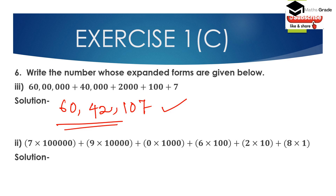Fourth: 7 × 10 lakh + 9 × 10,000 + 0 × 1000 + 6 × 100 + 2 × 10 + 8 × 1. Now 7 multiplied by 10 lakh is 70 lakh, and 9 multiplied by 10,000 is 90,000, and 0 multiplied by 1000 is 0. So the number is 7,90,628.